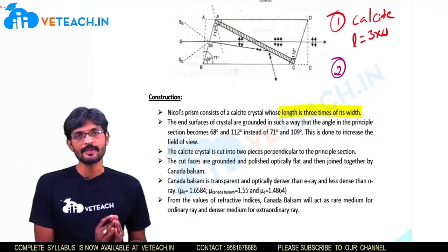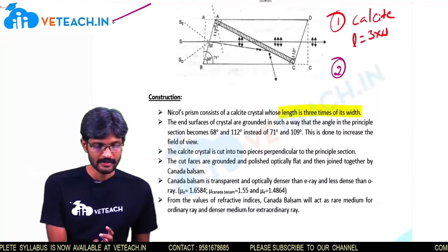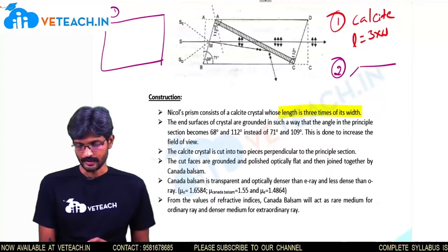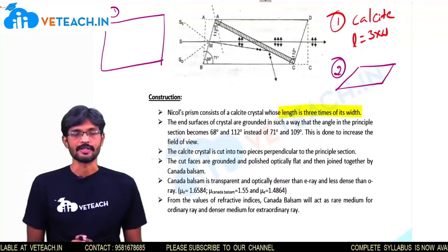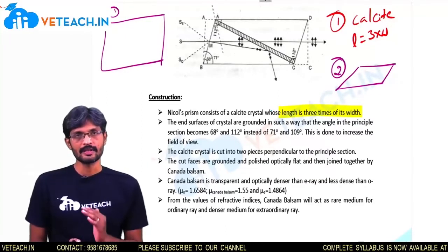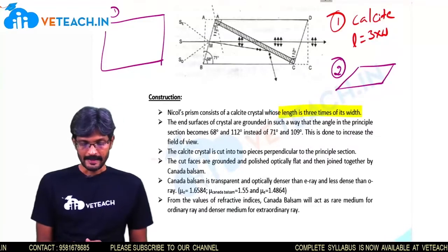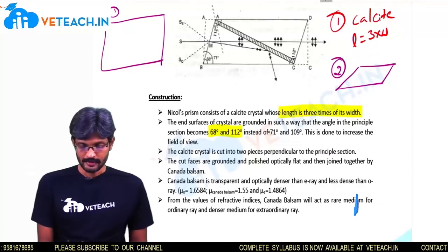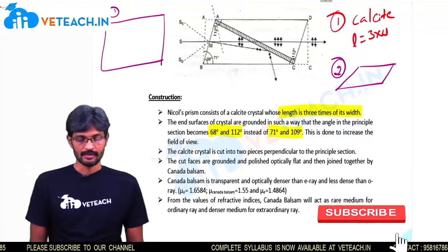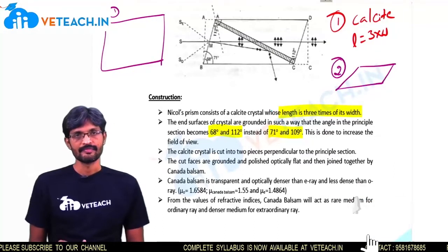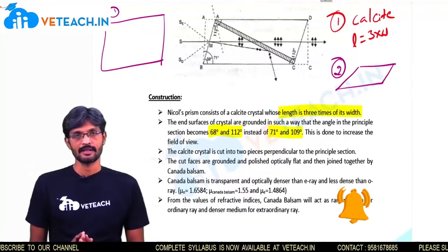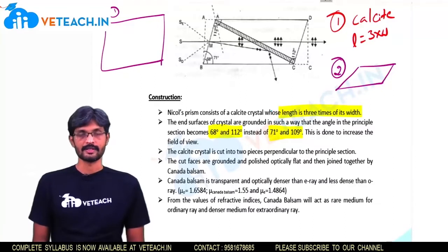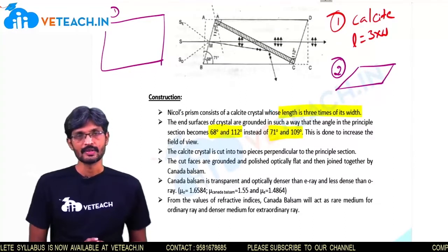Step two: he ground the end surfaces of the crystal and polished them. The end faces are ground such that the angles in the principal section become 68 degrees and 112 degrees, instead of the original 71 degrees and 109 degrees. The purpose of the grinding is to increase the field of view.